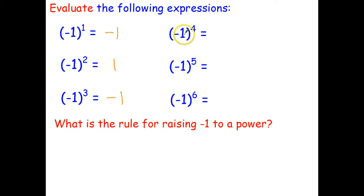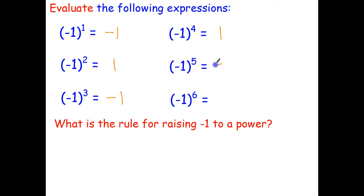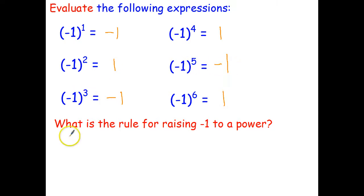Here we have negative 1 multiplied by itself 4 times. Negative 1 times negative 1 is positive 1, and times negative 1 times negative 1 is positive 1. Hopefully you can see the pattern now — if we have an odd power like 1, 3, or 5, the answer is negative 1.